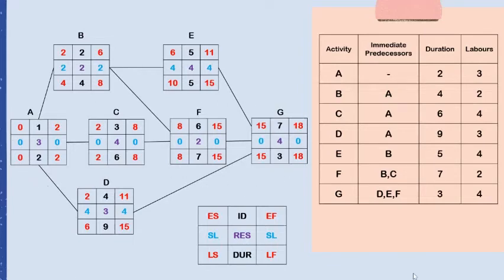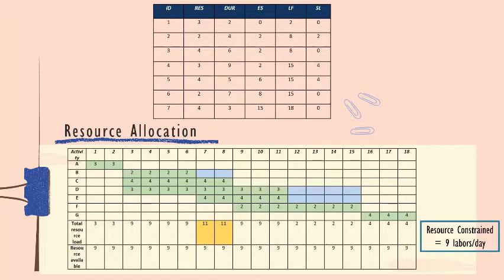That's all from the first speaker. Now passing to Naili Akilah. Hello and Assalamualaikum. My name is Naili Akilah binti Muhammad Azam and I will continue this presentation. After constructing the project network diagram, we construct a table consisting of the activities, resources (number of laborers), duration, early start, late finish, and slack. From this table, we can construct the resource allocation table.